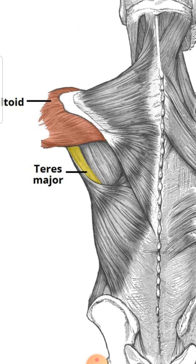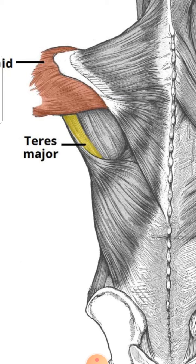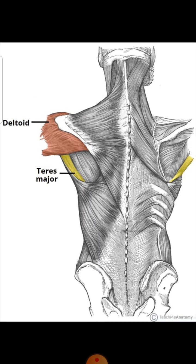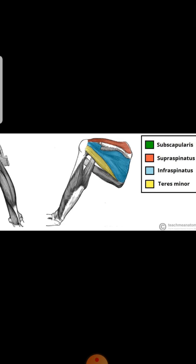Let's revise the teres major muscle again. It originates from the inferior angle and the lower part of the lateral border of the scapula, and inserts onto the intertubercular sulcus of the humerus. Its main function is to adduct and medially rotate the humerus, but it also assists in extension of the arm and stabilizes the scapula as well.